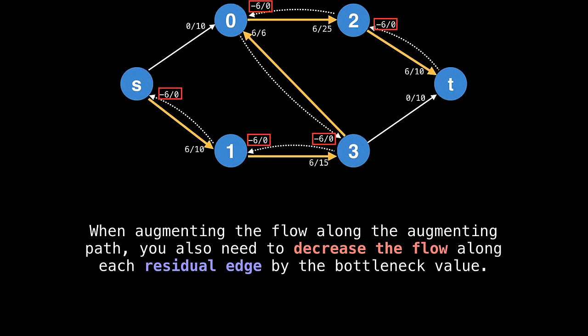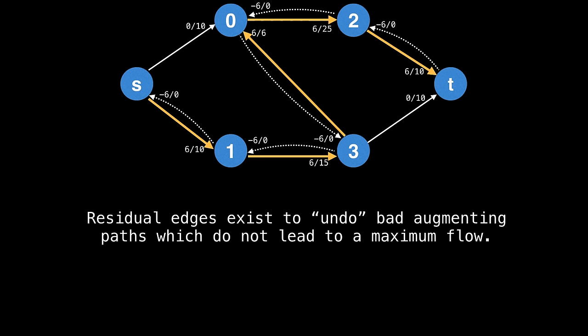We not only need to increase the flow along the forward edges, but also decrease the flow along the backwards edges, which are called residual edges. The residual edges are the dotted edges going backwards in the reverse order of the augmenting path. The logic behind having residual edges is to undo bad choices of augmenting paths, which do not lead to a maximum flow.